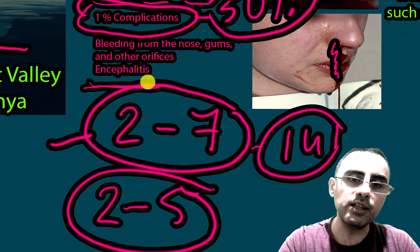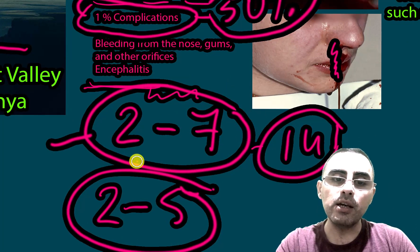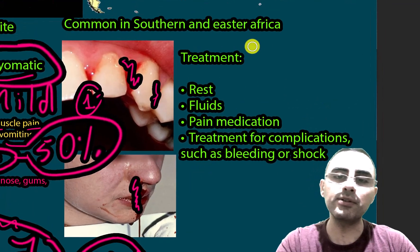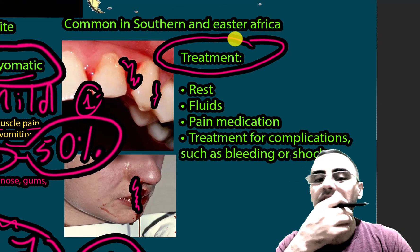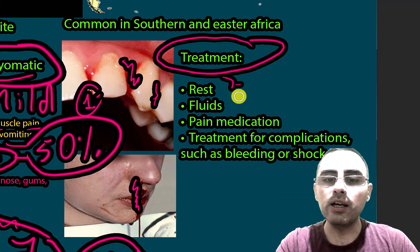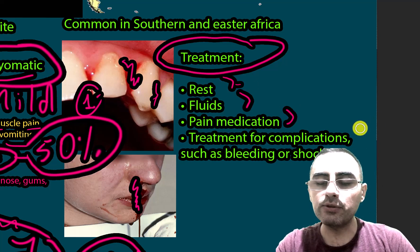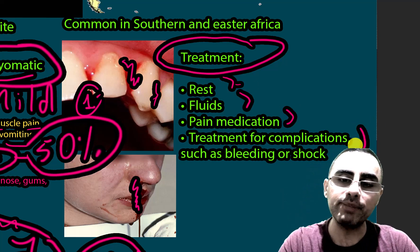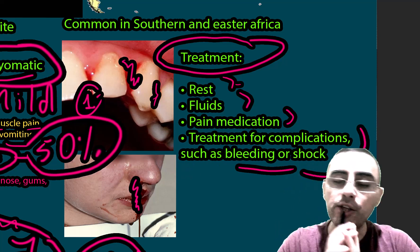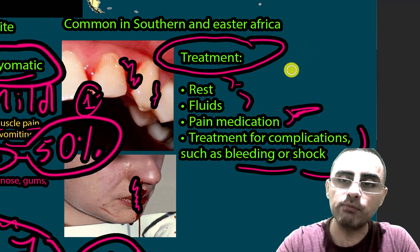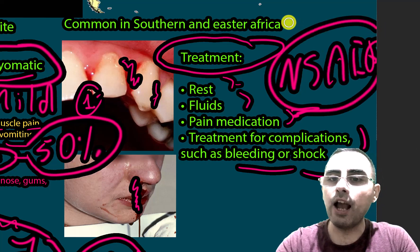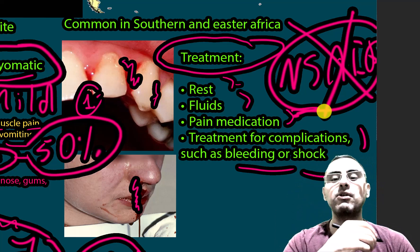The course of this disease is generally mild. There is no specific treatment and no specific vaccine for Rift Valley Fever. Treatment is supportive care: rest, enough fluids, pain medication, and treatment of complications in a clinic or hospital if there is bleeding, shock, or encephalitis. Regarding pain medication, non-steroidal anti-inflammatory drugs are not recommended because they can increase the risk of bleeding.